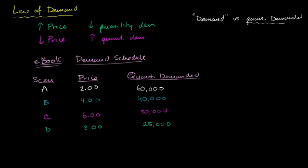I'll do one more. Scenario E. If I raise it to $10, now the quantity demanded, let's just say it is 23,000. So this relationship between, this shows the law of demand right over here. And this table that shows how the quantity demanded relates to price and vice versa, this is what we call a demand schedule.